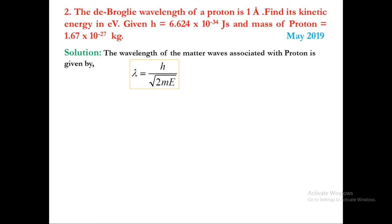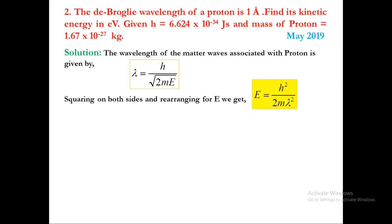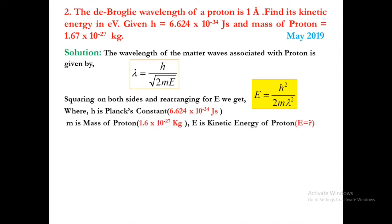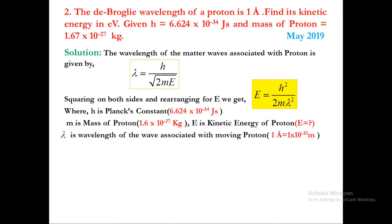This is the formula from de Broglie hypothesis. But in this problem we are asked to find out the kinetic energy in terms of de Broglie wavelength. We have to rearrange this equation for kinetic energy by squaring both sides, giving E is equal to h squared divided by 2m lambda squared. Here m is mass of proton, 1.67 into 10 power minus 27 kg, and lambda is 1 angstrom, which is 1 into 10 power minus 10 meters.